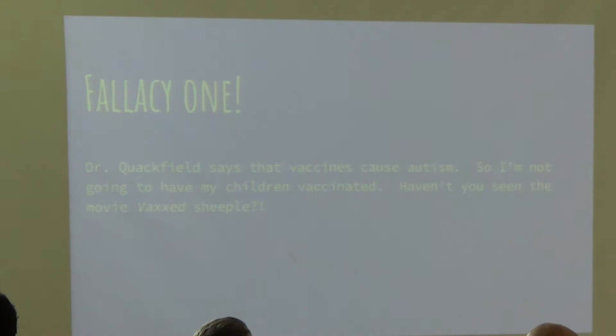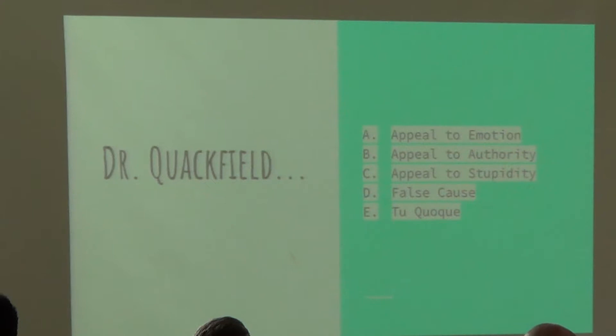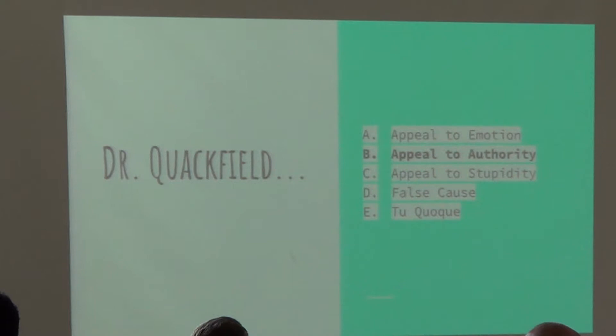The correct answer is appeal to authority — saying that because an authority figure thinks something is true, it must be true. Another way to look at it: since I say that this is a logical fallacy known as appeal to authority, it must therefore be an appeal to authority.